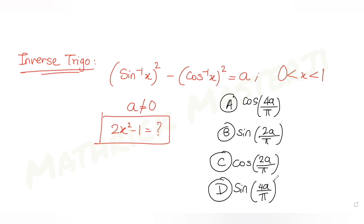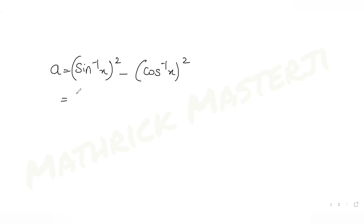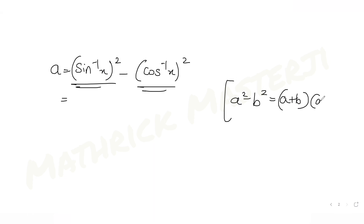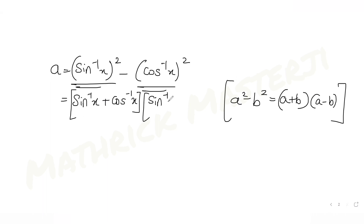So we have a = (sin⁻¹x)² minus (cos⁻¹x)². If I try to solve this, we know a² minus b² can be simplified as (a+b)(a-b). So I get (sin⁻¹x + cos⁻¹x) multiplied by (sin⁻¹x minus cos⁻¹x).